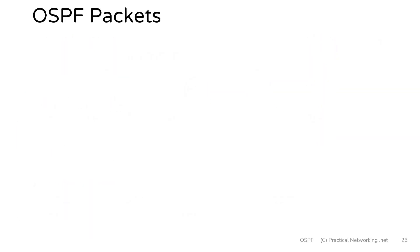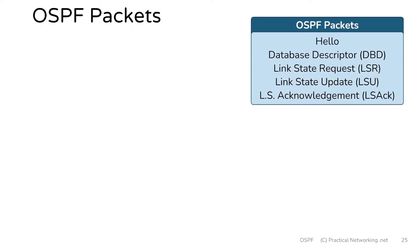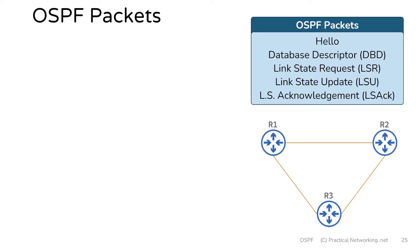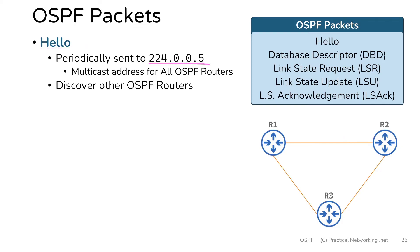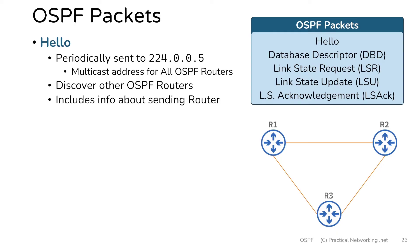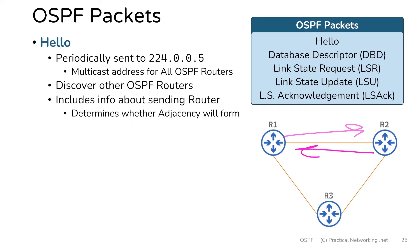Next, we can talk about the packets that OSPF uses in all OSPF conversations, and there are five of them. The first packet is the hello packet. Hello packets are sent periodically to the multicast address 224.0.0.5 — a special multicast address reserved for all OSPF routers. This is how routers will discover other OSPF routers. When you configure OSPF, the router is going to listen for requests to this address, and other routers will start sending hello packets to the same address. The content of the hello packet is what determines whether an actual adjacency will form.